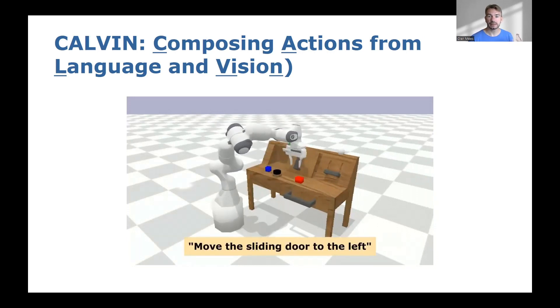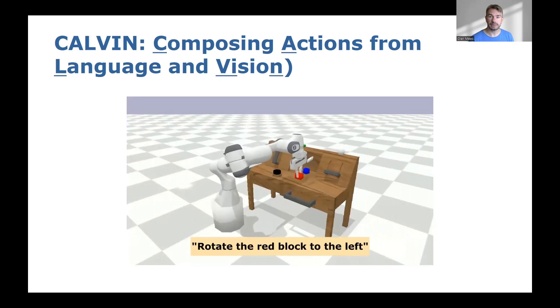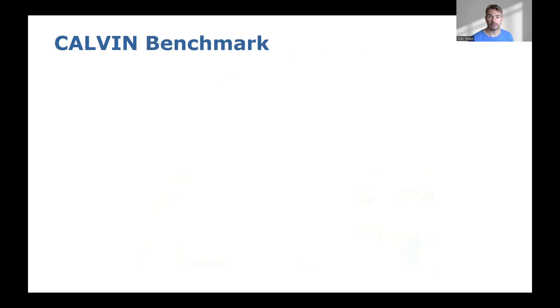In this setting, a single agent must solve complex manipulation tasks by understanding a series of unconstrained language expressions in a row. To evaluate the agent's ability for long-horizon planning, agents in this scenario are expected to be able to perform any combination of subtasks in any order.